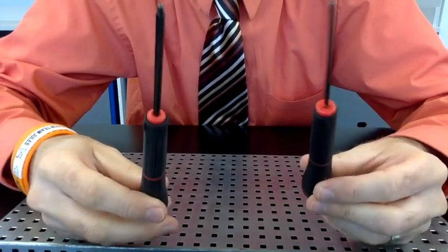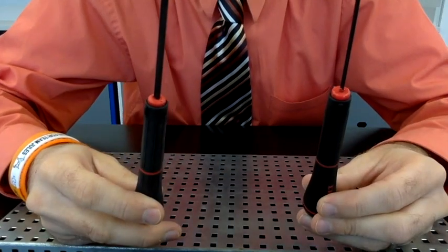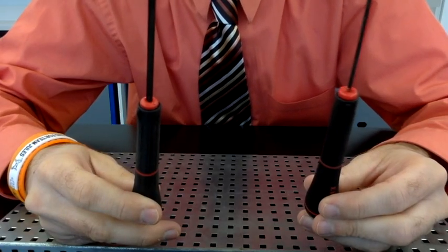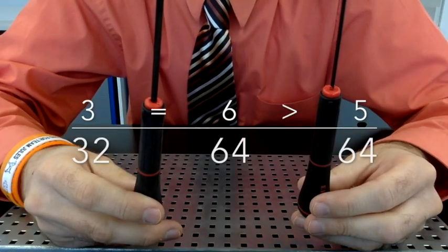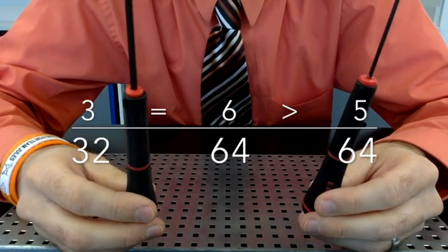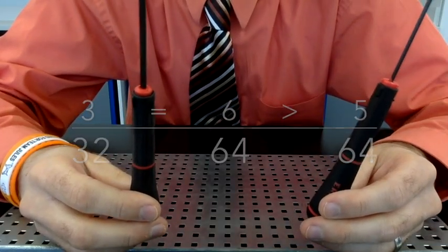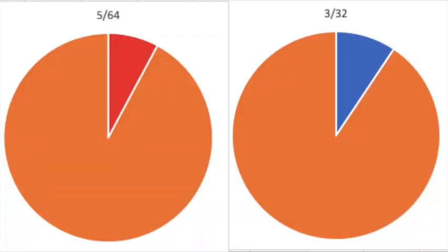We will use two different size allen wrenches: 3/32nd and 5/64th. To see which is bigger, you can manipulate these fractions to make them both have the same denominator and compare the size of the numerator. Or, you can just look at this pie chart that shows that 5/64ths is slightly smaller.